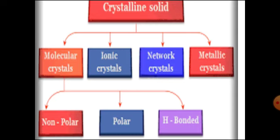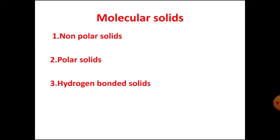Next is metallic crystal. They have metallic bonds. The last type is molecular crystals. Molecular crystals are classified into three types on the basis of the nature of the bond: the first is non-polar solid, the second is polar solid, and the third is hydrogen bonded solid.